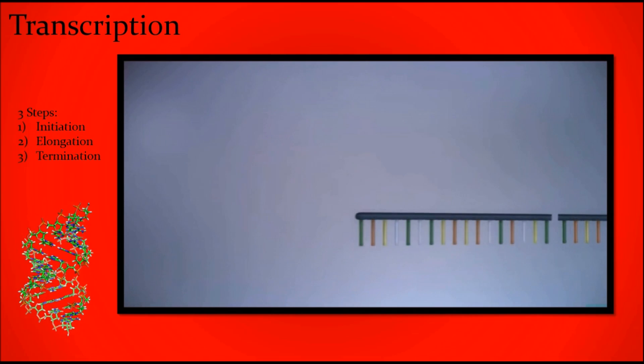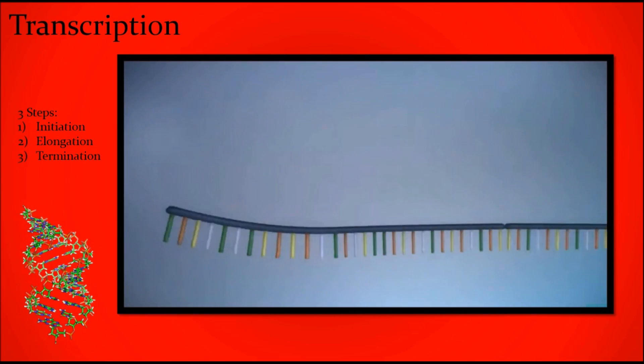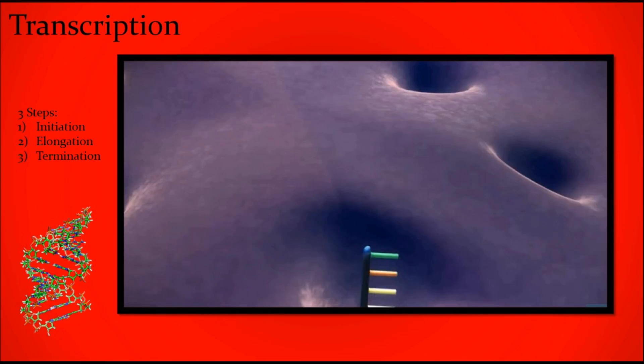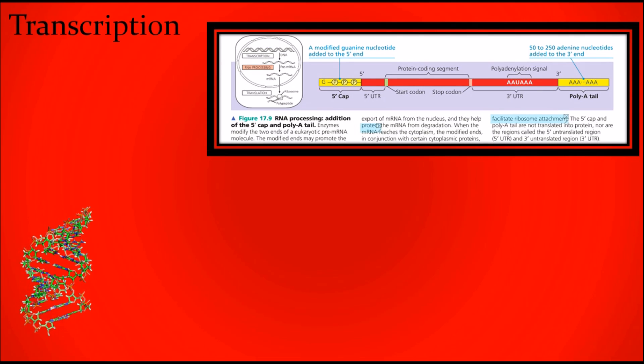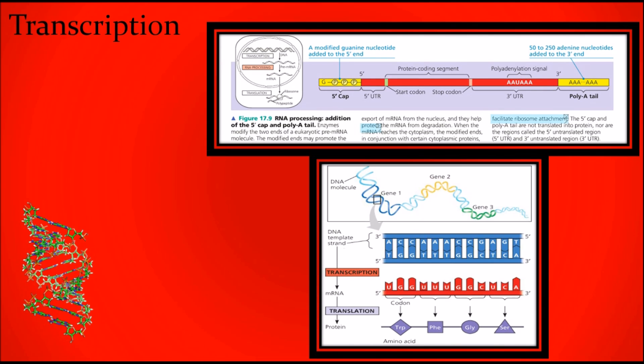For eukaryotes, modifying - splicing, 5 prime capping, 3 prime poly-A tail - introns are removed, but exons stay in the groove to make proteins